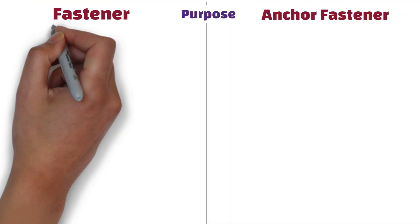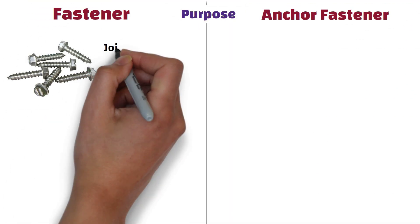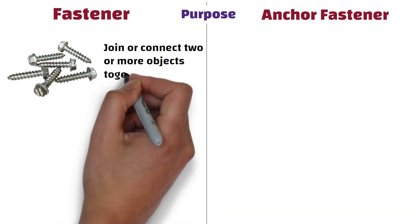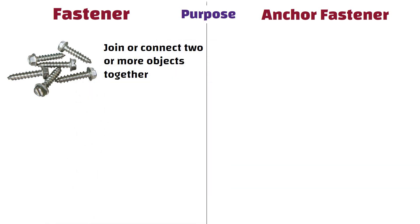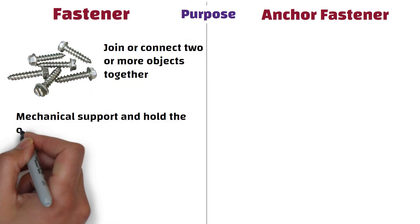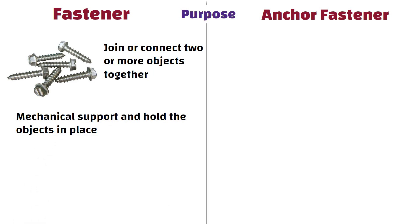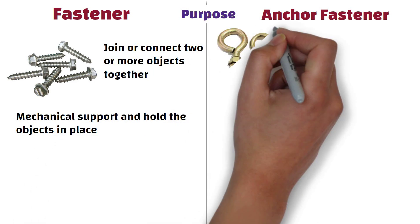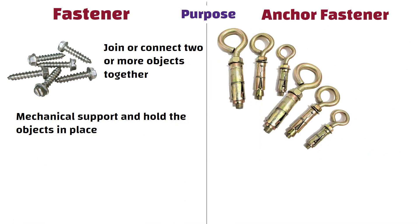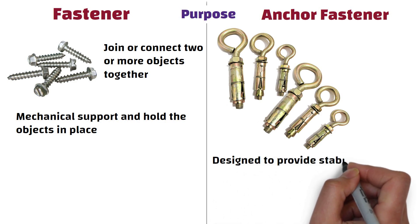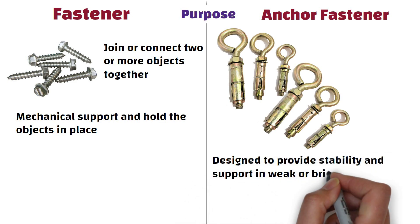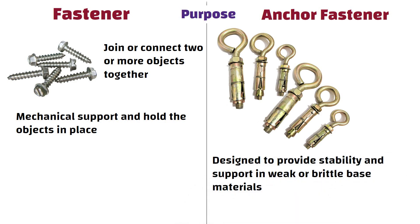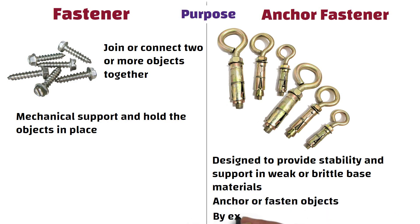Purpose: Fasteners are primarily used to join or connect two or more objects together. They provide mechanical support and hold the objects in place. On the other hand, anchor fasteners are specifically designed to provide stability and support in weak or brittle base materials. They are used to anchor or fasten objects to these materials by expanding or engaging with them.